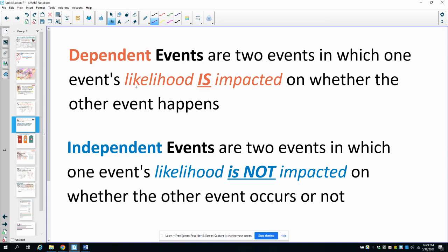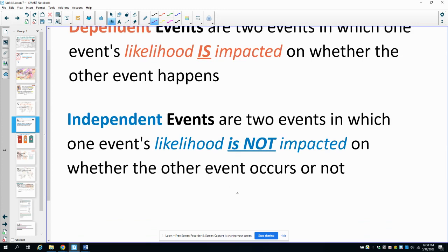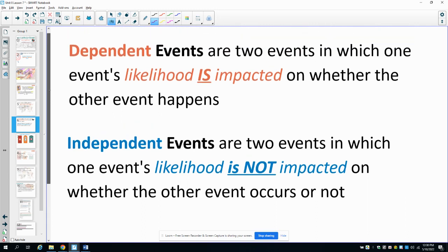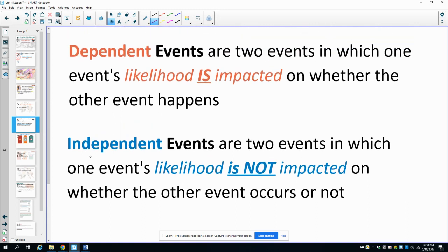So this is the idea behind dependent and independent events. If the likelihood is impacted, then the events are dependent. So if one event's likelihood is impacted on whether the other event happens, those are dependent events like drawing a crayon and not replacing it. Independent events are when one event's likelihood is not impacted by the others. So like flipping a coin and rolling a die, it doesn't matter what happens on either one, they're not impacted. Or drawing a crayon and then putting it back in the bag and drawing another crayon because the probabilities or the likelihoods reset themselves. So dependent events impact each other. Independent events do not.